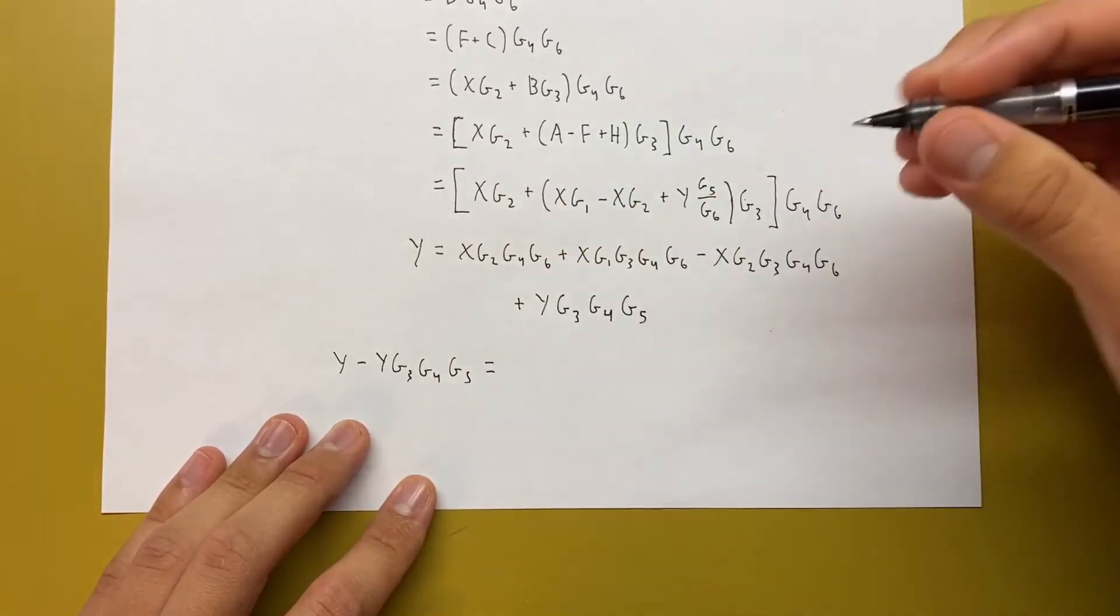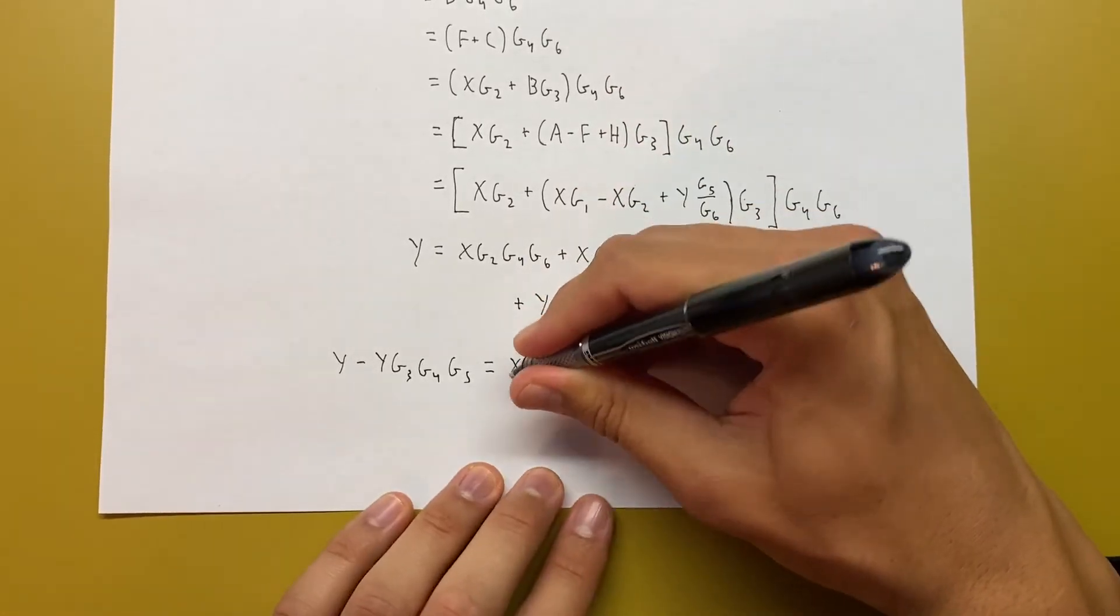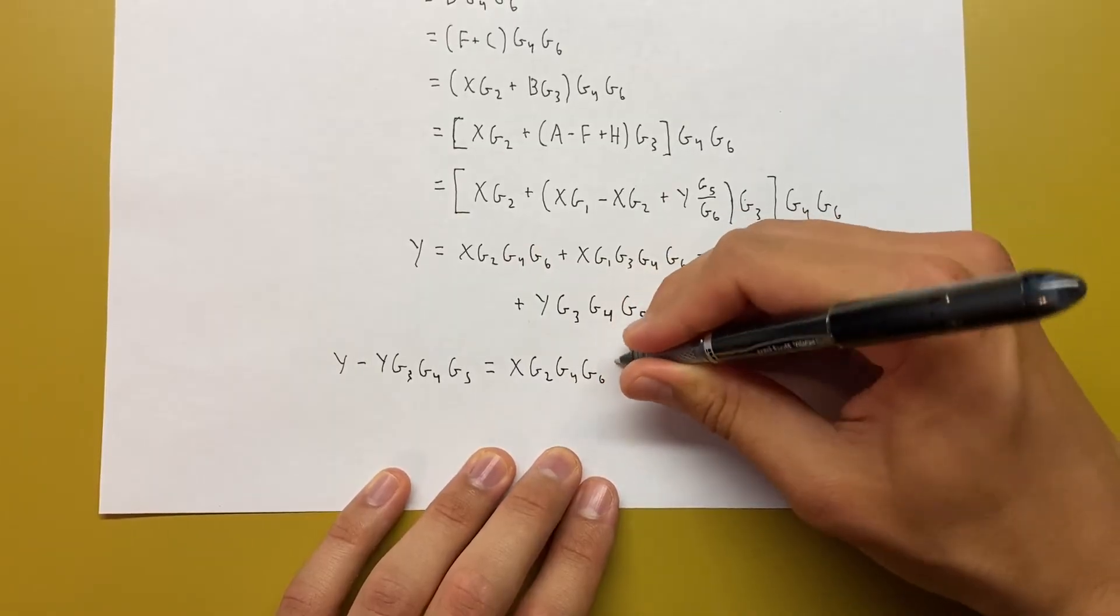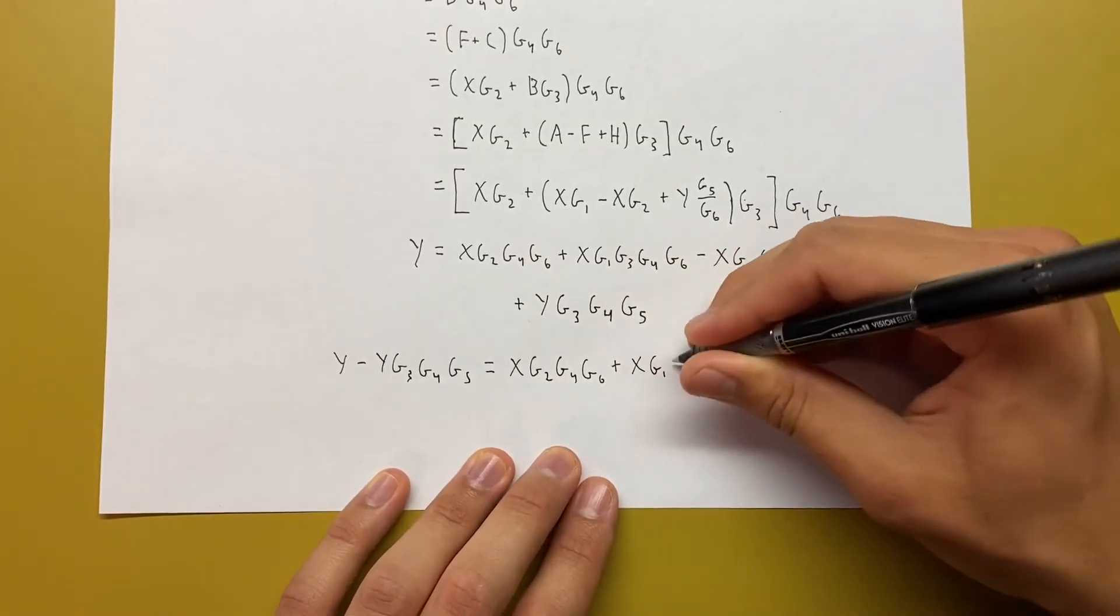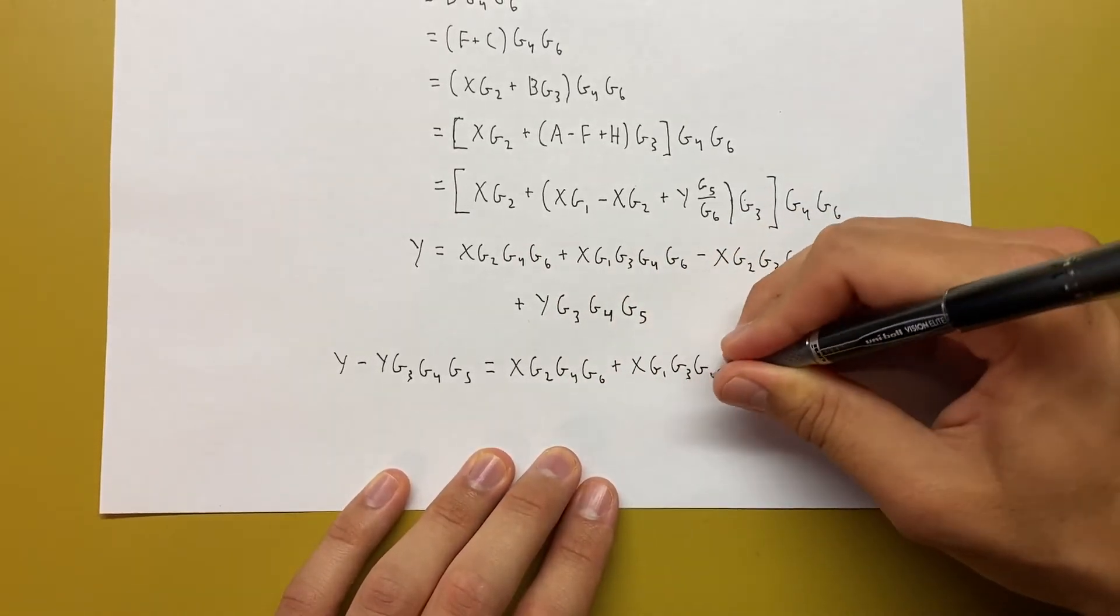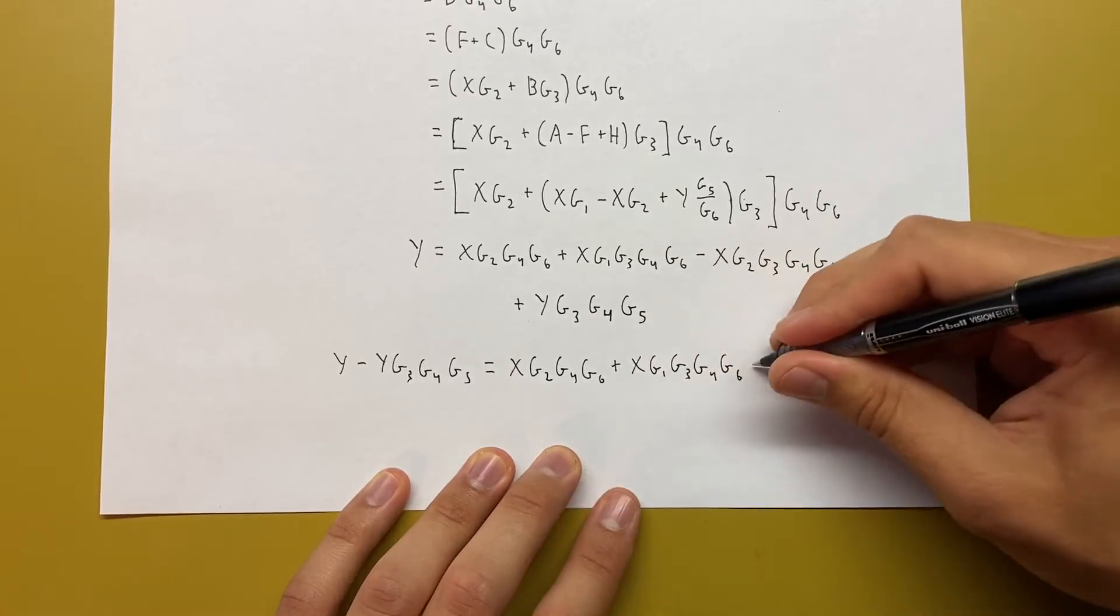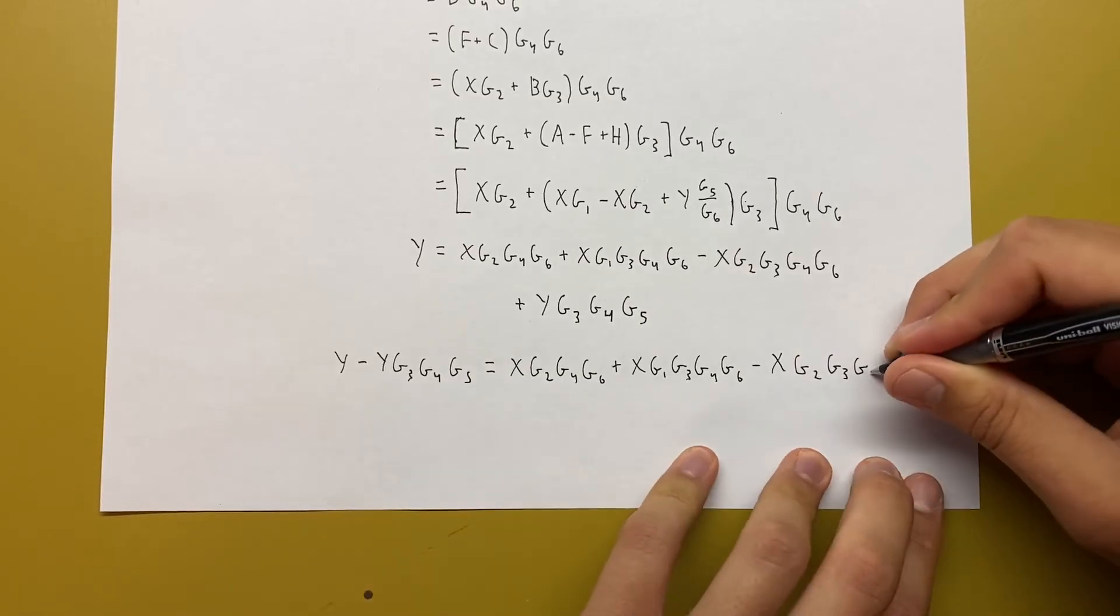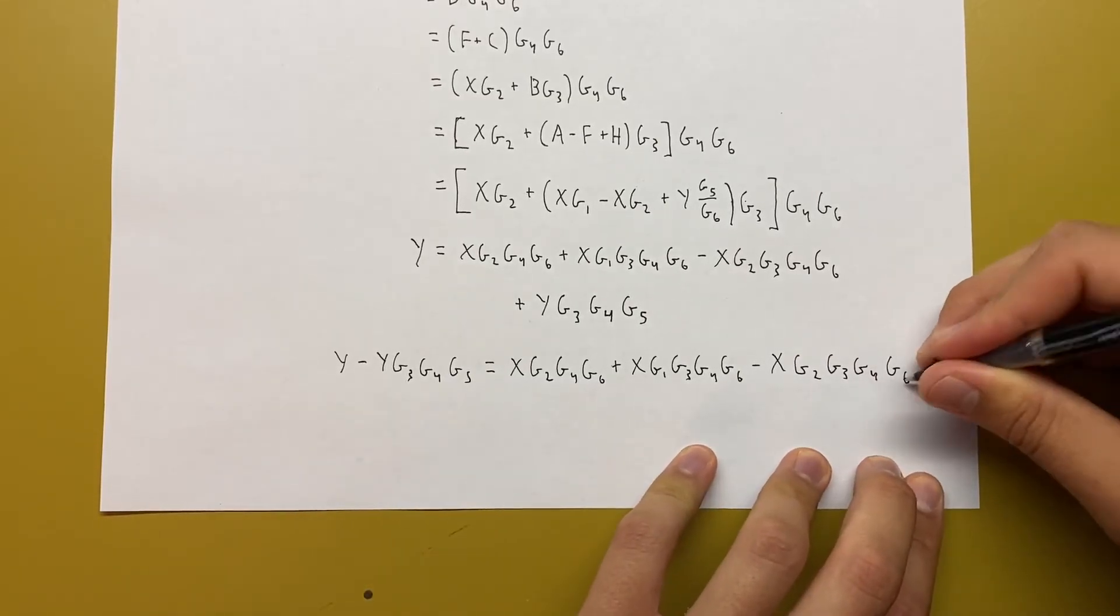Equal to just these three terms up here. X G2 G4 G6 plus X G1 G3 G4 G6 minus X G2 G3 G4 G6.